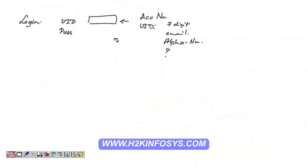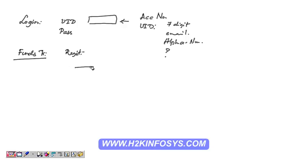Let's talk about funds transfer. What are the steps for funds transfer that we need to inform to our developer? First, we have to register a payee. When registering the payee, we need details like his name, account number, which bank and branch he has an account in, and what is his location. We provide all such information when we first register the payee.